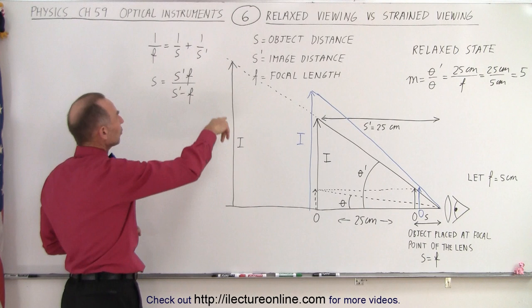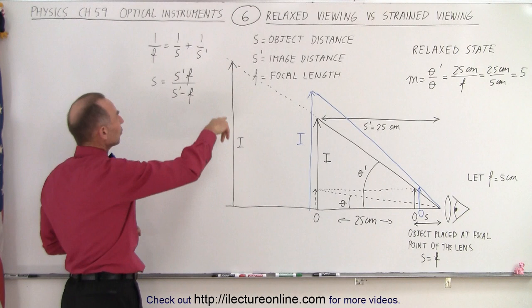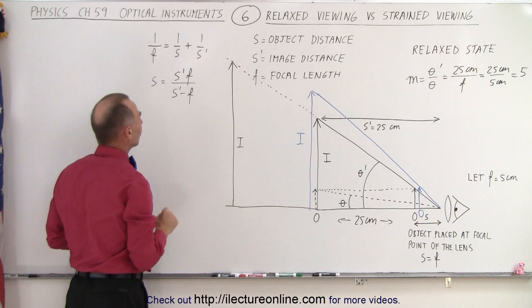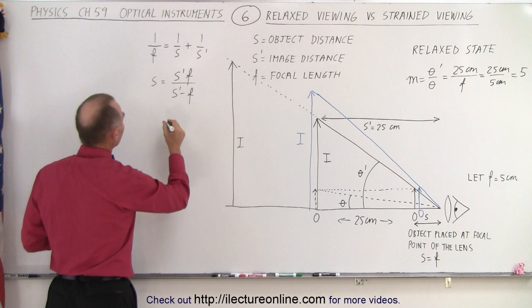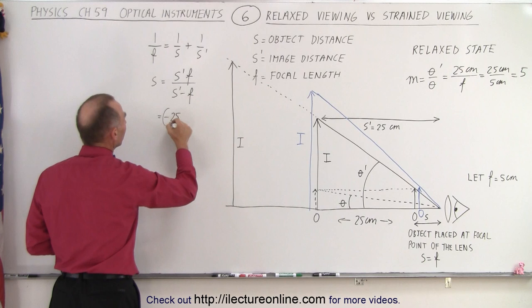So let's go back to the equation that we know from lenses that 1 over the focal length equals 1 over the object distance plus 1 over the image distance. Solving that for the object distance, we now will figure out by placing the image over here with our eyes where the object distance needs to be. So let's calculate that. So this is equal to the image distance of minus 25 centimeters because it's in front of the lens. That makes it a negative image distance.